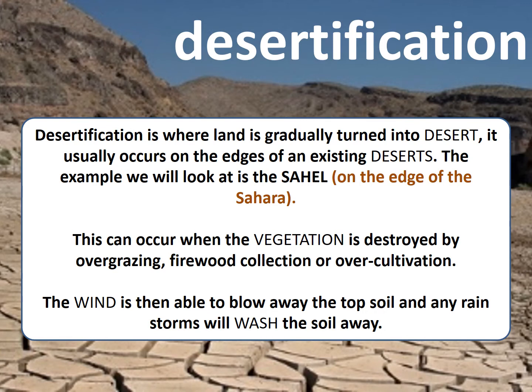Desertification is where areas that used to be a different ecosystem — that used to have soil and were able to grow things — and weren't quite dry or hot enough to be a desert, are now becoming deserts. If you look at the picture in the background on the screen, you can see that what was soil has now become basically completely compacted and unusable. There's no way you could dig that up and grow anything on it.